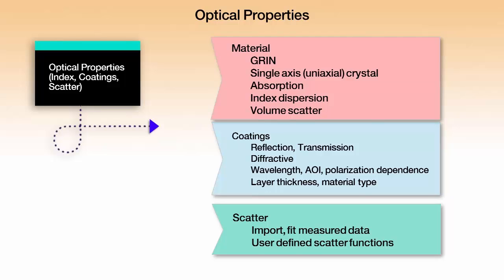Coatings we can specify in terms of their reflectance, transmittance, and absorption. We can also describe them in terms of layer thicknesses or material types. We can apply diffraction as a coating, so a diffraction grating can be thought of as a special kind of coating. And we can do wavelength, angle of incidence, or polarization dependence in these things.